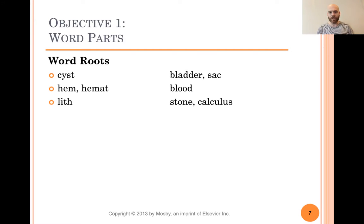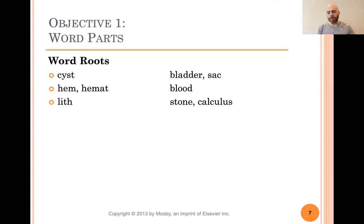Lith means stone, and this also refers to calculus. Calculus means a group of, say, kidney stones or bladder stones — little minerals that get stuck together and build up, getting bigger and bigger until you have a little stone in your body made of calcium and other minerals. It really is a little rock, for lack of a better word.